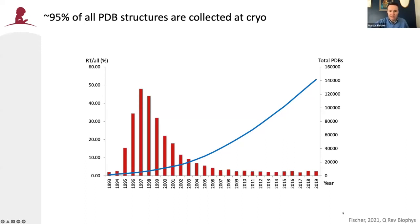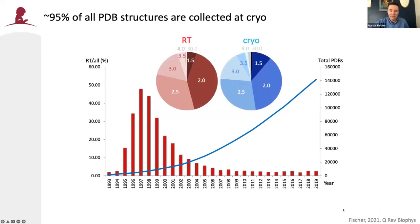If you're interested in some of the details of room temperature crystallography and data collection, there's a review I wrote about a year ago that clarifies some of the myths that deter people from collecting data — for example, that you cannot obtain high resolution data at room temperature. This analysis shows that the distribution of resolutions at cryo in blue and room temperature in red is actually surprisingly comparable.